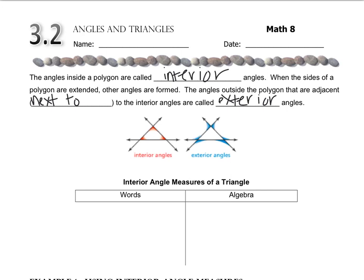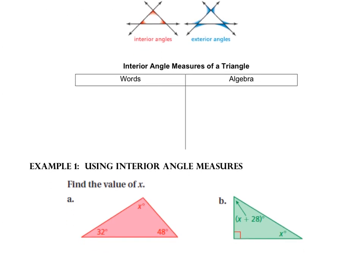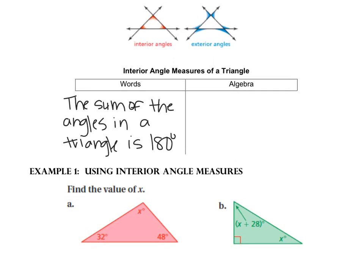You might already know this from earlier math classes. The total degrees — the sum of the degrees — of the angles in a triangle adds to 180. The way that we would write that in algebra is: x plus y plus z is equal to 180, and that's just like three random numbers.